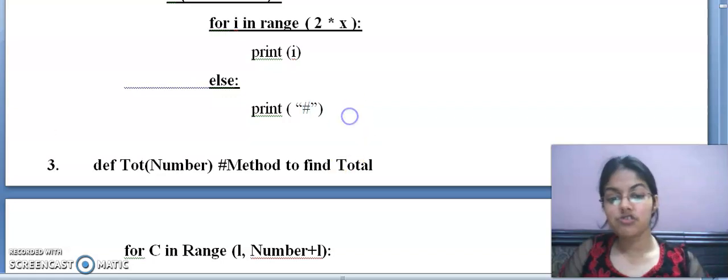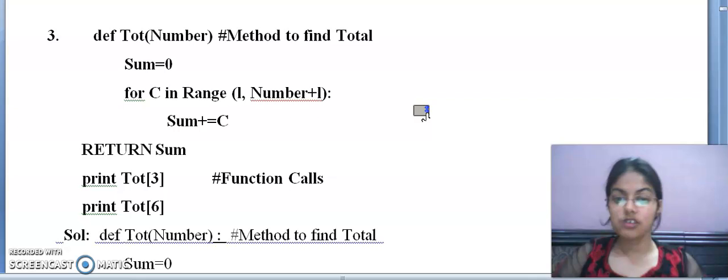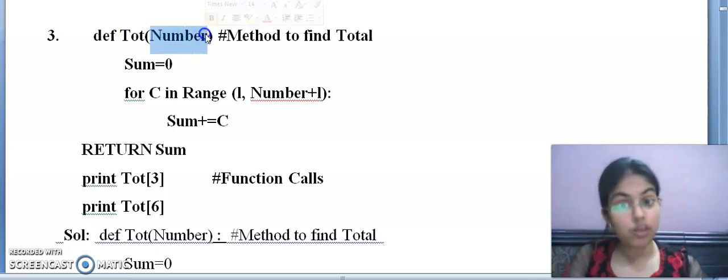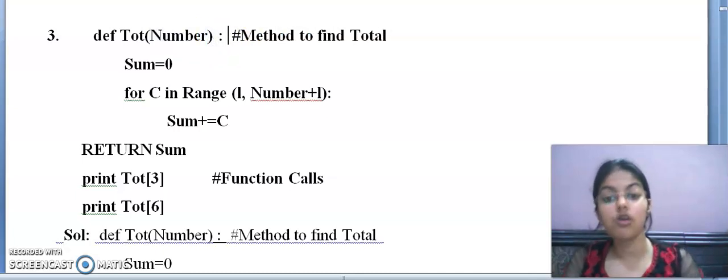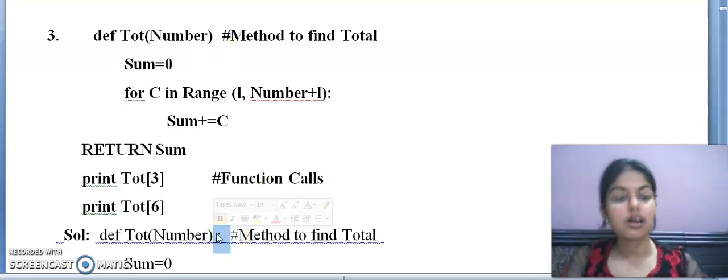Now moving to our next question, again of the same type. In this video we will discuss error finding questions. Let's start this question. Def, this is a keyword. Tot, this is the name of a function. This is a formal argument. After the function header, you know, always colon is to be used. Here colon is not given, so you have to write the colon plus underline it always.